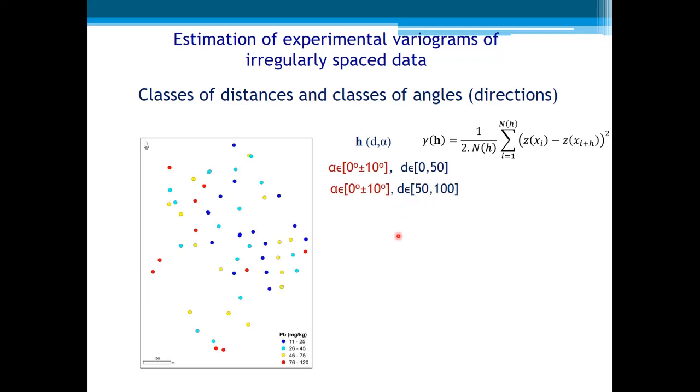Take another class of distance, for example, same direction, different class of distances, between 50 and 100 meters. And you can see this pair of points here. And the variogram will be calculated for this direction, class of directions, class of angles, and this class of distances.